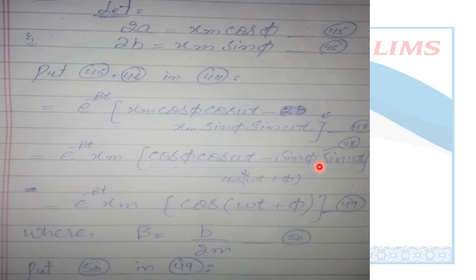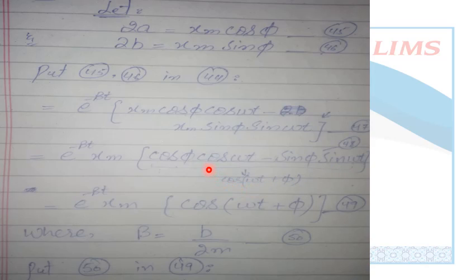To simplify using the trigonometric identity: cosθ cosφ minus sinθ sinφ equals cos(θ + φ). So this entire term becomes cos(ωt + φ). Using this identity in equation 48, the full term simplifies to cos(ωt + φ), giving us equation number 49.